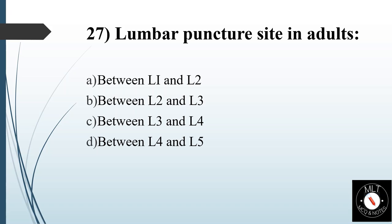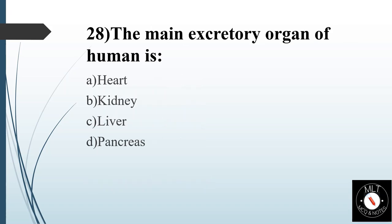Twenty-seventh question. Lumbar puncture site in adults. Option A: Between L1 and L2. Option B: Between L2 and L3. Option C: Between L3 and L4. Option D: Between L4 and L5. Answer is Option C: Between L3 and L4.